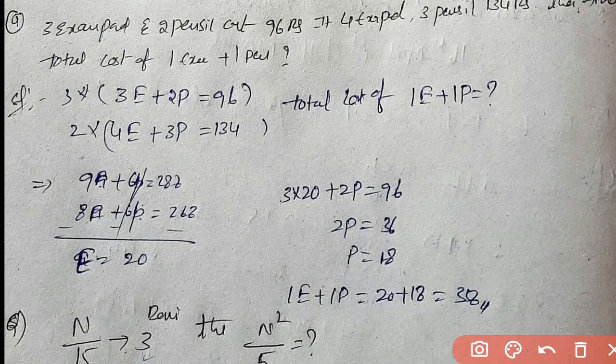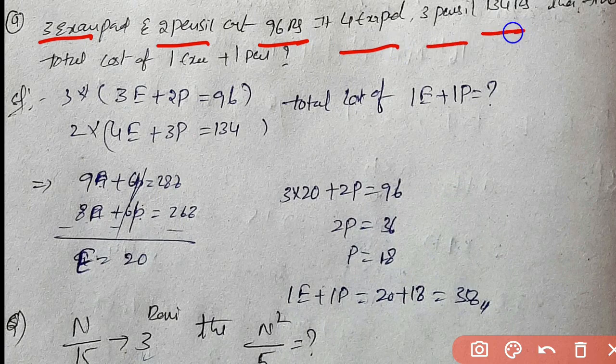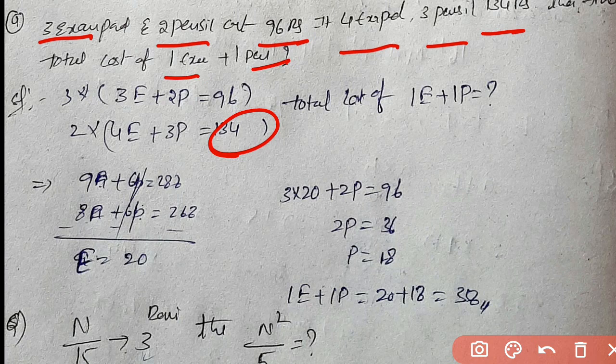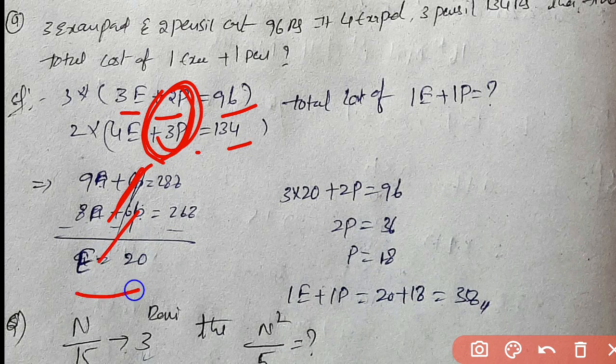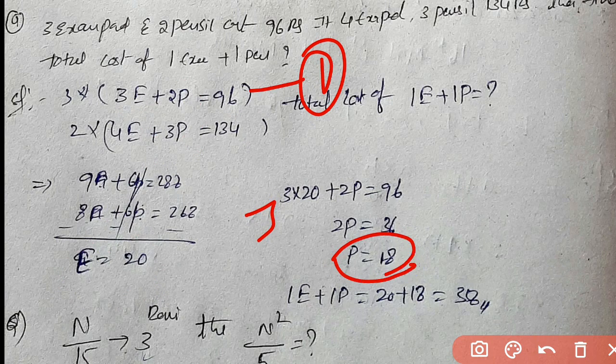Three exam pads and 2 pencils are 96 rupees. Four exam pads and 3 pencils are 134 rupees. Find 1 exam pad and 1 pencil. Divide the second equation by 2 to make coefficients align. Then multiply first equation by appropriate value and add equations to eliminate variables and find the answer.